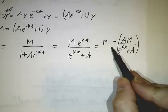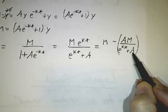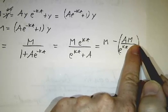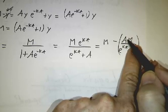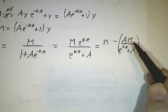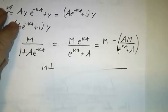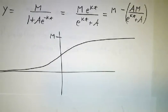Towards the end of the epidemic, e to the kt is much, much bigger than A. This ratio looks like this. And it's M minus a little bit that's shrinking exponentially. So this problem, which is called the logistic growth model, is a combination of exponential growth and exponential decay.